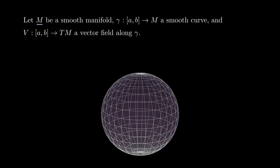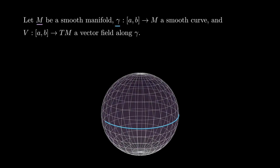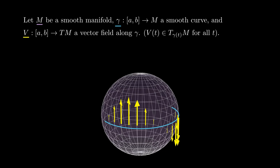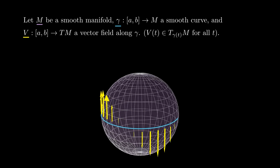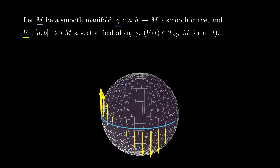Imagine you have a smooth manifold M, a curve gamma in M, and a vector field V along gamma, meaning a vector tangent to the manifold at each point of the curve. I would like to study how the vector field is changing along the curve — to do that I would like to compute the infinitesimal rate of change of V along gamma.